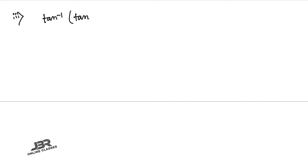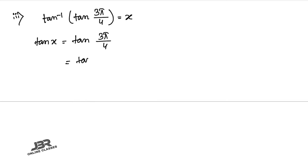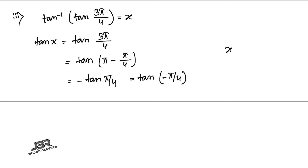Sum number 5.3: tan⁻¹(tan(3π/4)) = x, so tan x = tan(3π/4). Writing 3π/4 = π − π/4 and using tan(π − θ) = −tan(θ), we get −tan(π/4) = tan(−π/4). Therefore x = −π/4.